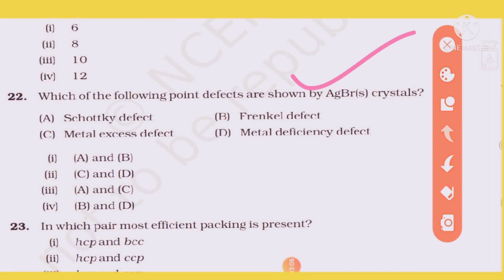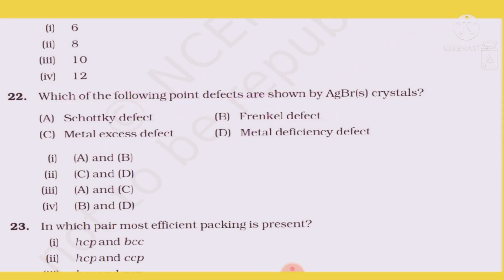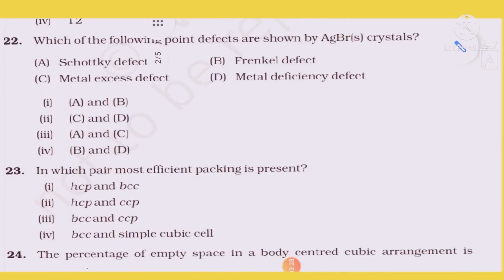AgBr crystal question: AgBr shows both Schottky defect and Frenkel defect. This is a very important question — AgBr exhibits both types of defects, so options A and B are both correct.